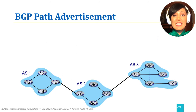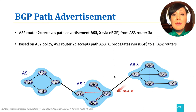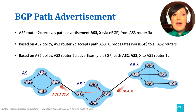Let's go through a simple BGP example. In this network, assume AS2 router 2C receives path advertisement AS3-X from AS3 router 3A using eBGP. Based on AS2 policy, AS2 router 2C accepts path AS3-X and propagates it to all AS2 routers using iBGP. Based on AS2 policy, AS2 router 2A advertises path AS2-AS3-X to AS1 router 1C using eBGP. Based on AS1 policy, AS1 router 1C accepts path AS2-AS3-X and propagates it to all AS1 routers using iBGP.